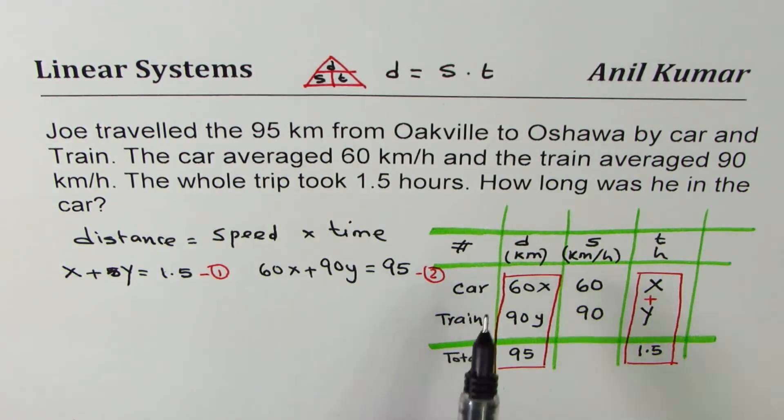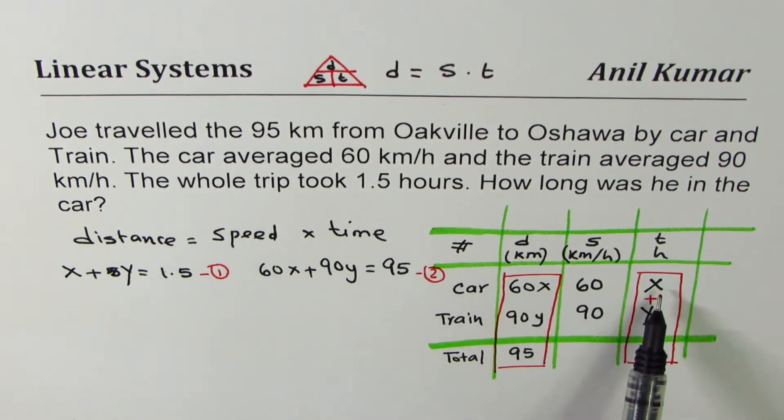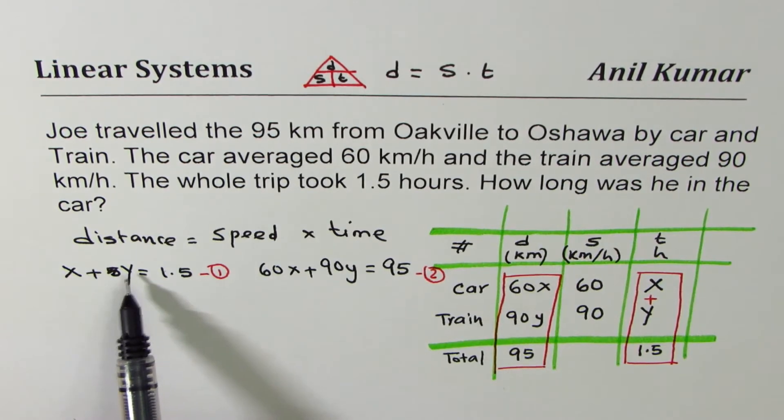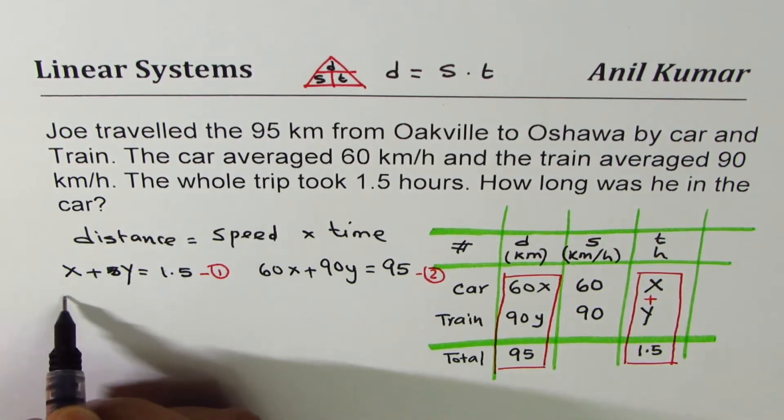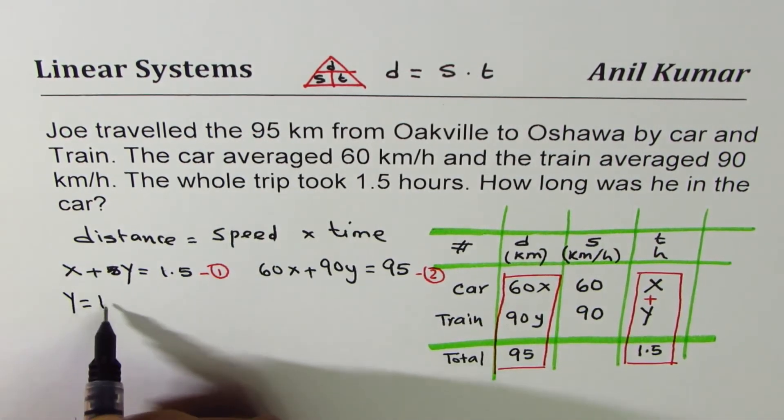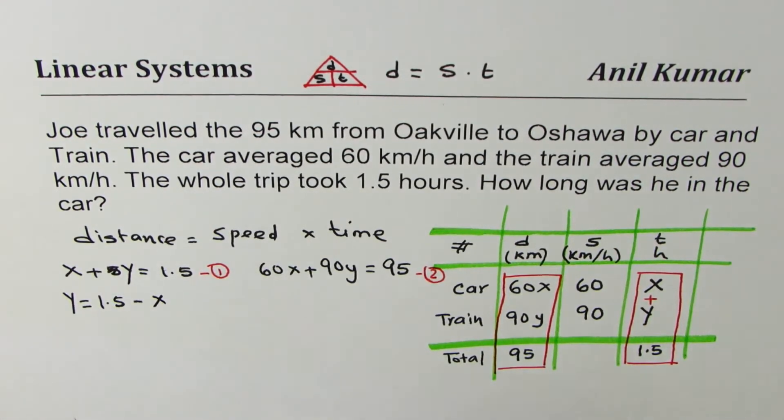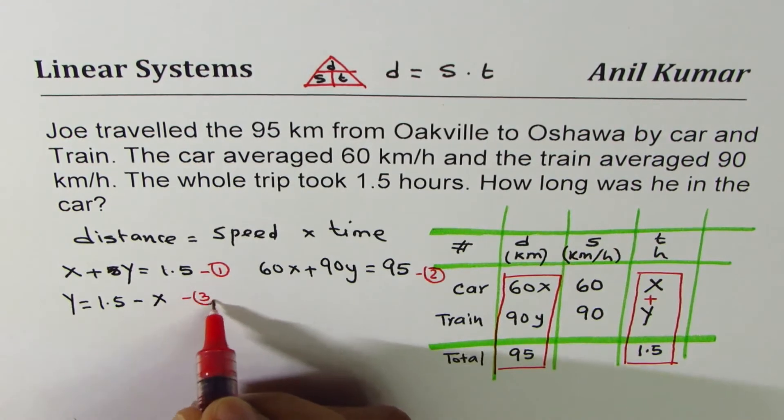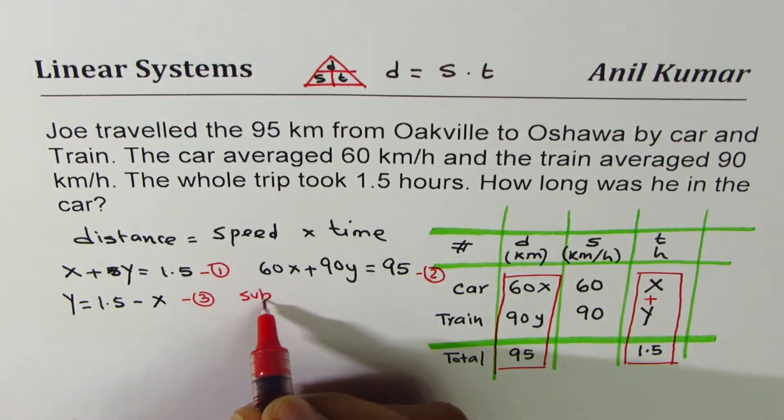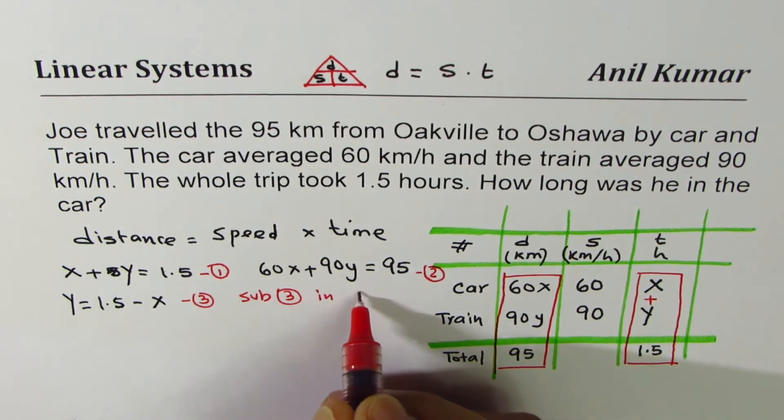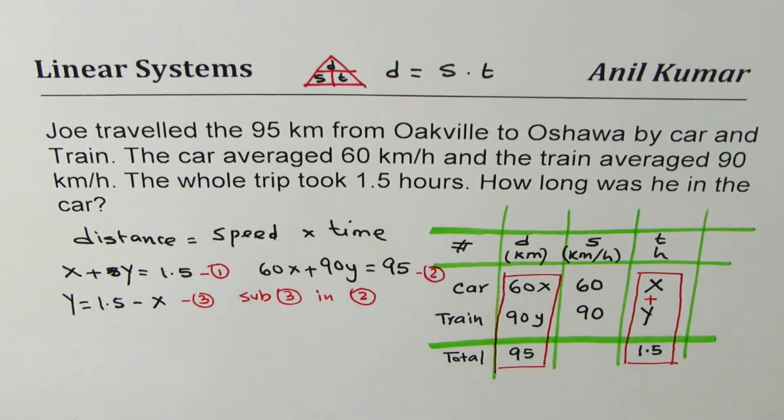Now since we need how long was he in the car, we need to find x. So let us replace y with x. From the first equation, I can write y equals to 1.5 minus x. I get my equation number 3. Now we'll substitute this value of y, that is sub 3 in equation 2. That's what we are going to do.